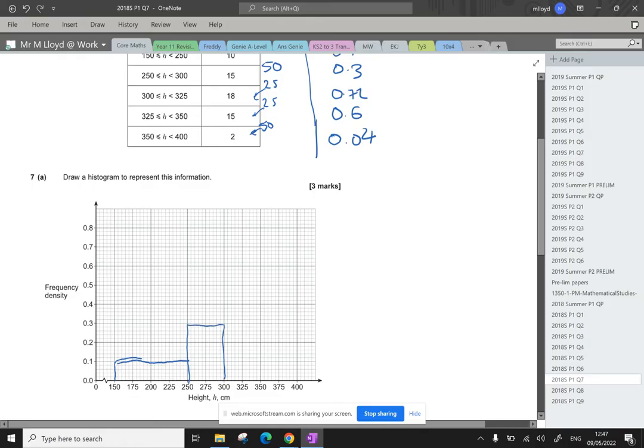Right, our next one's at 0.72, which is going to be 0.7 plus a little square. So up we go. Oh dear. You'll all be using pencil and ruler when you do this. Goes across to 325, and then down again. Lovely.